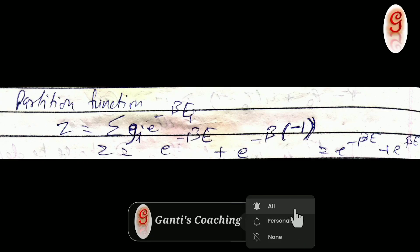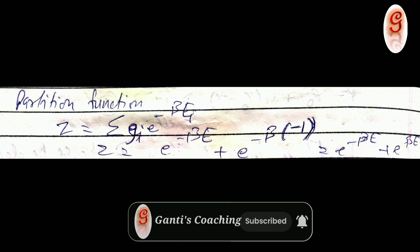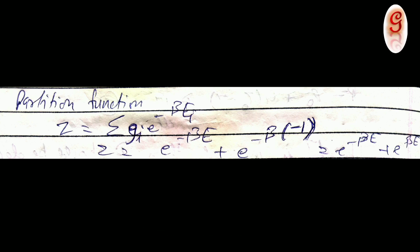Here we use the partition function, which is denoted by Z. Z equals summation of Gi times e raised to the power of minus beta Ei, where Gi is the degeneracy and Ei is the energy.